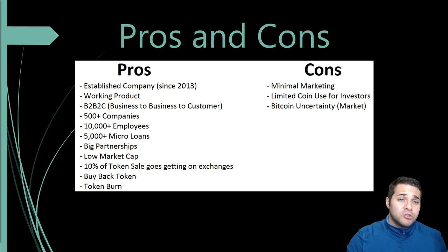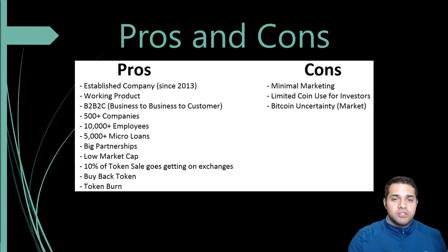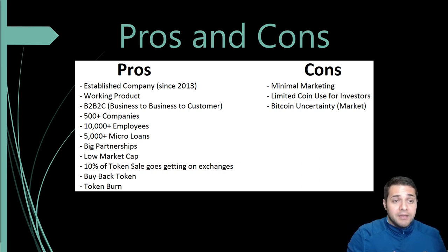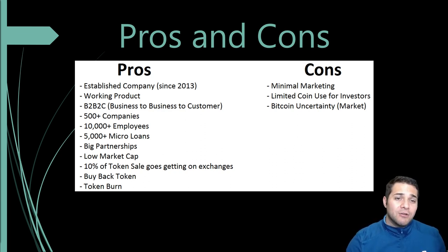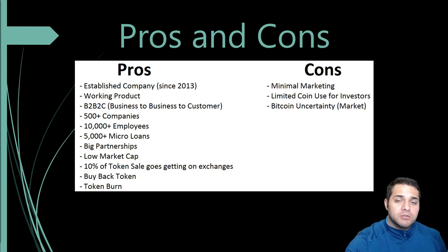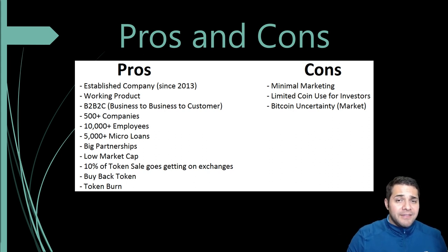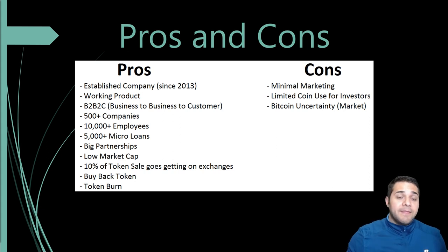For pros: it's an established company since 2013 with a working product, which is huge. Their B2B2C model separates them from the competition and gives them the edge. They already have 500 plus companies using Solarium, equaling about 10,000 plus employees. They've had over 5,000 micro loans on their platform, and they have some fairly big partnerships with another one to be announced soon. They have a super low market cap, 10% of tokens going toward getting on quality exchanges, a token buyback mechanism, and any unsold tokens will be burned.